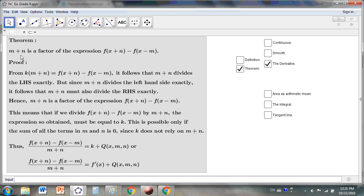I say that m plus n is a factor of the expression. Right? It has to be a factor of that expression. And the proof is easy. k times that must equal to the expression. So it follows that if m plus n divides the left-hand side exactly, it must also divide the right-hand side exactly. So m plus n is a factor of this expression. And this means that if we divide f(x+n) minus f(x-n) by m plus n, the expression obtained must equal to k. But this is only possible if the sum of all the terms in m and n is 0.